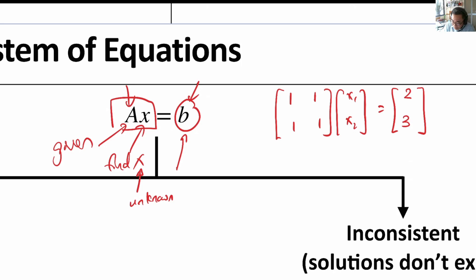The second equation, X1 plus X2 equals to 3. So, the word inconsistency comes from this idea.